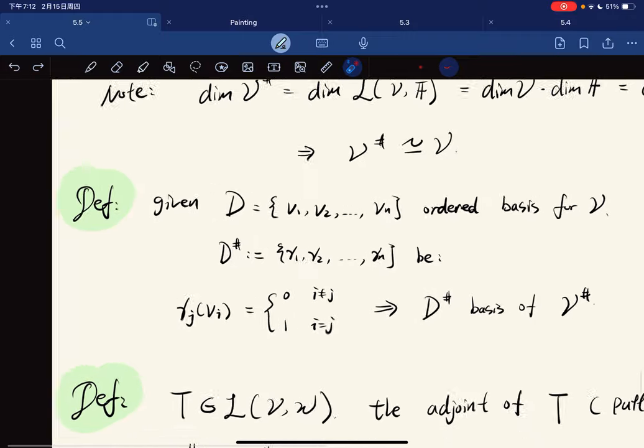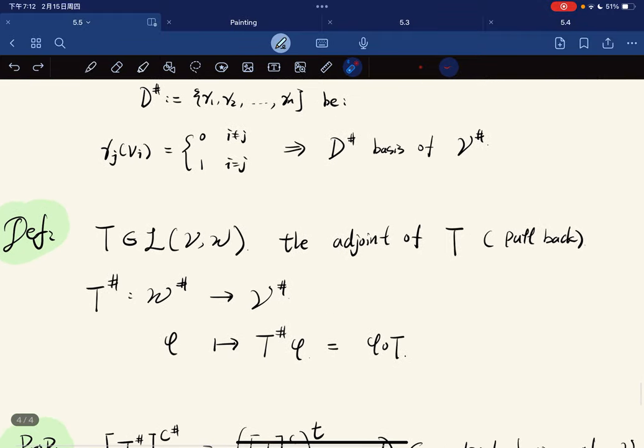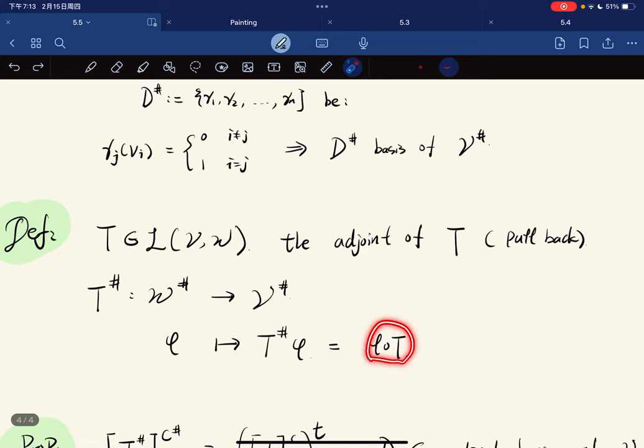We define the adjoint of T, or the pullback: T* maps from W* to V*. It's kind of a pullback where each functional φ maps to T*(φ) = φ ∘ T.